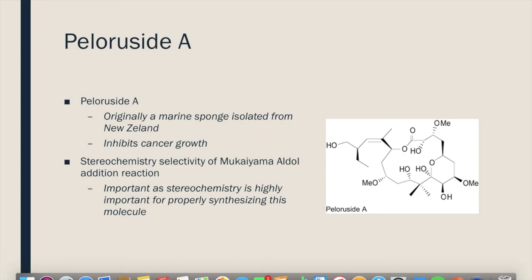So why is this reaction important? Peloruside A is a molecule that was originally found in a marine sponge isolated from New Zealand. And it is a molecule that inhibits cancer growth. And so it has been used in an array of cancer treatments since its discovery.